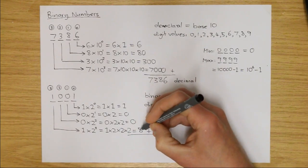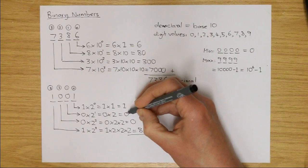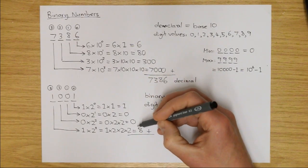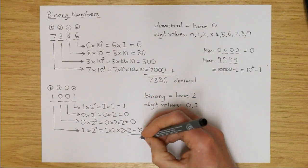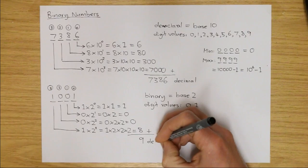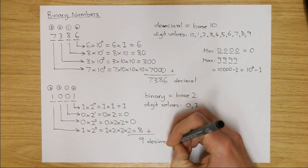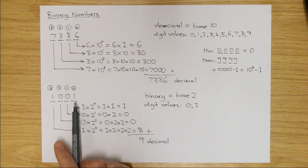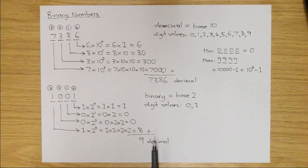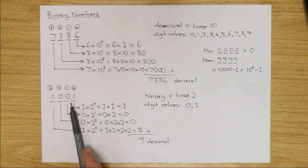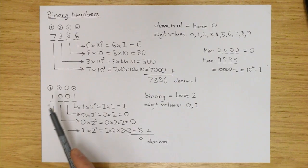As before, if I add up the contribution from each of my four digits, I get the total value of the number: 8 plus 0 plus 0 plus 1 equals 9 decimal. So the four-digit binary number 1001 is just a different way of writing the number 9. Nine written as a decimal number is precisely the same number as 1001 written as a binary number — they're just two different ways of representing the same number.